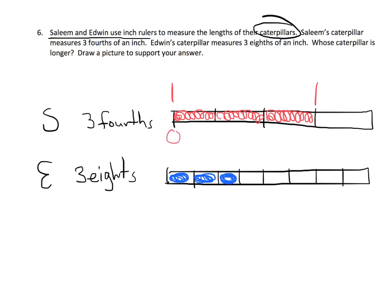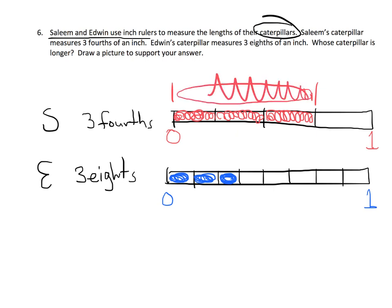Each bar represents zero to one inch. Here is Salim's caterpillar at three-fourths of an inch, and here is Edwin's caterpillar at three-eighths of an inch. We can clearly see that Salim's caterpillar is longer than Edwin's.